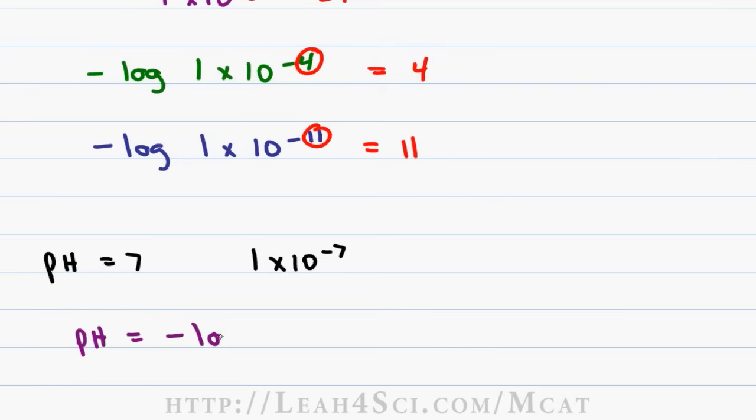The pH is equal to negative log the H plus concentration, which is equal to negative log 1 times 10 to the minus 7. We have our value set up as 1 times 10 to a negative power. Grab that power and the answer is 7.